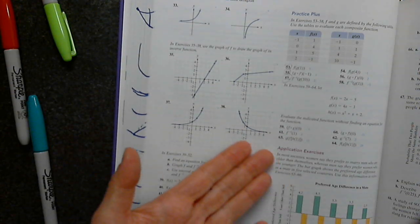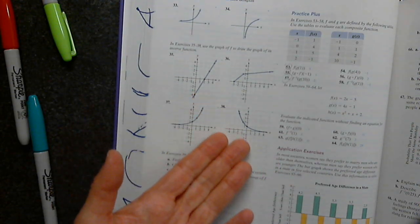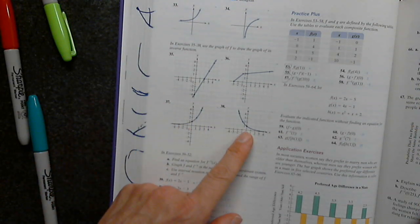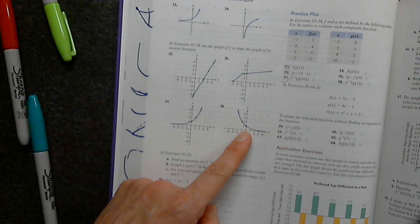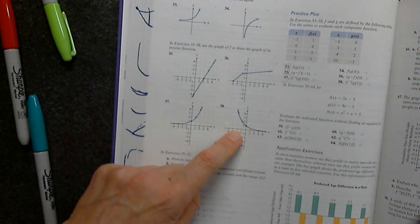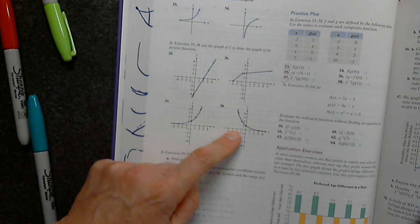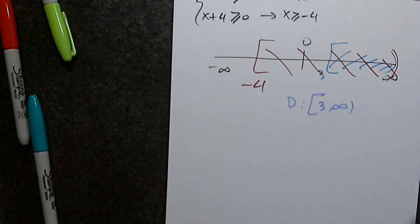Can you write down any clear points from the graph? We identified: (0, 1), (-1, 2), and (-2, 4). Please write those ordered pairs down.